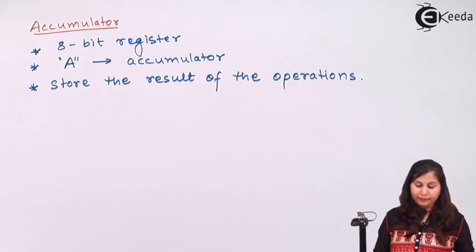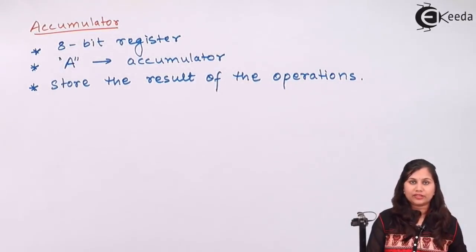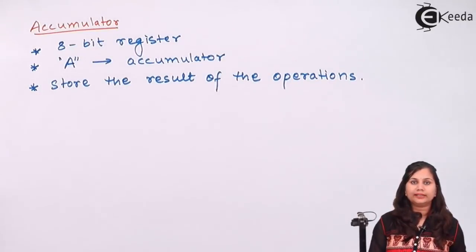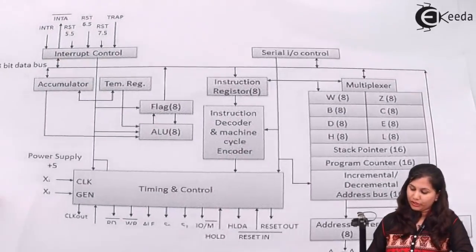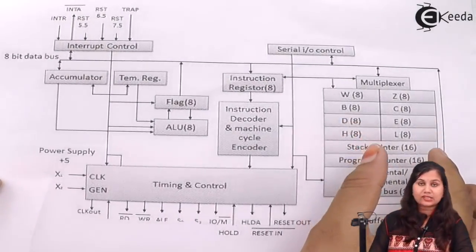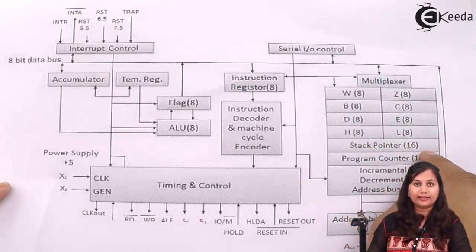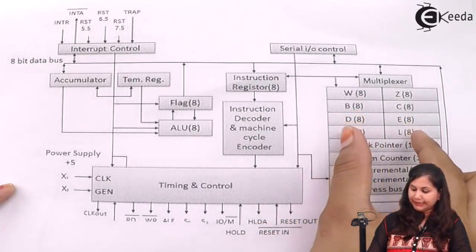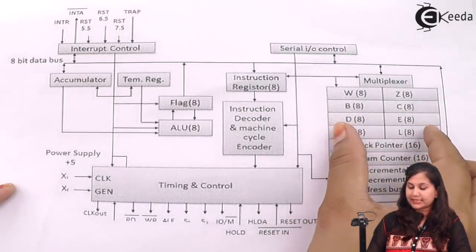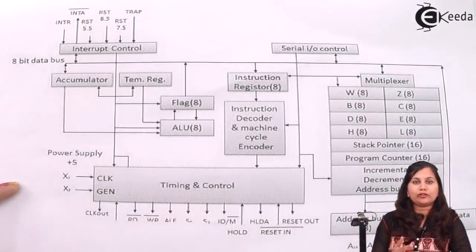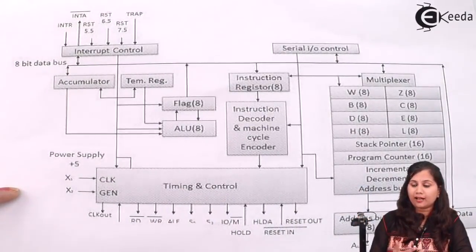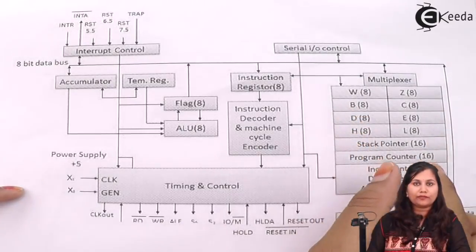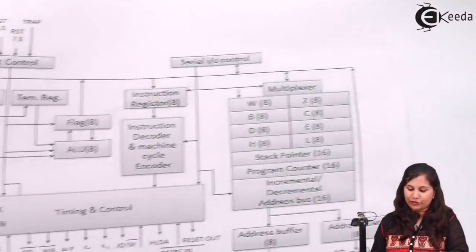In the microprocessor, there are various registers used to store or hold the data used in the operations. There are 6 registers: B, C, D, E, H, and L. These are 8-bit registers and they form pairs — BC, DE, and HL — forming 16-bit registers. If the microprocessor has to handle 16-bit data, it can use the pairs BC, DE, or HL.